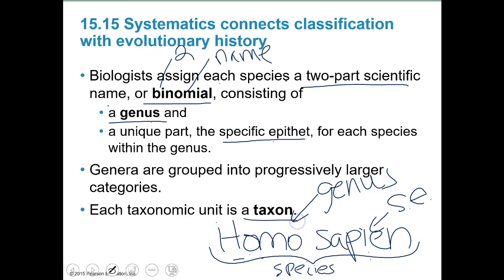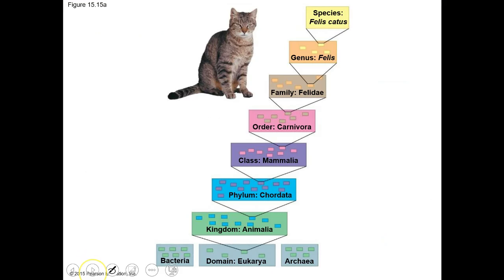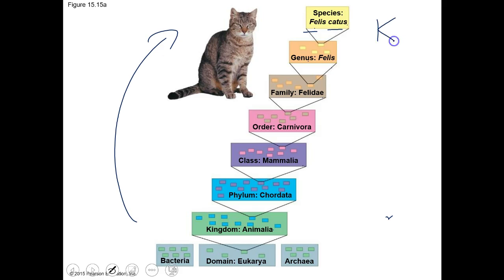The plural of genus is genera. These are grouped into progressively larger categories. We have species - for example, Felis catus. The genus Felis falls under the family category, then order, class, phylum, kingdom, and eventually domain. You need to know that order: kingdom, phylum, class, order, family, genus, and species. I can rattle them off because I've been doing this for years, but you may need a mnemonic like 'King Philip came over for good spaghetti.'